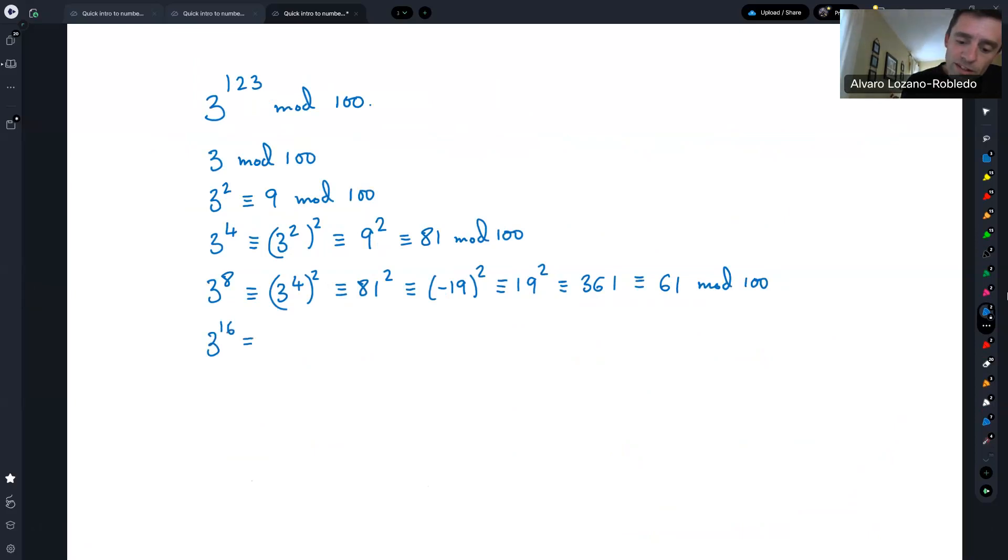Now what is 3 to the 8? So 3 to the 8 is 3 to the 4 to the 2. So that is 81 squared. And now I can use some modular arithmetic to help me out. I can do, for example, this is minus 19 squared because 81 is congruent to minus 19. So this is the same as 19 squared. And that helps because it's a smaller number. And this is 361 if you know some of your squares. And 361 modulo 100 is just 61 modulo 100. Similarly, I can compute 3 to the 16. 3 to the 16 is going to be 3 to the 8 squared. 3 to the 8 I know is 61. So I just have to compute 61 squared. And 61 squared is 3,721. And that is 21 modulo 100. Now I go for 3 to the 32. That will be 3 to the 16, 21 squared.